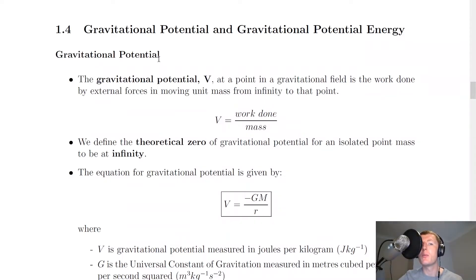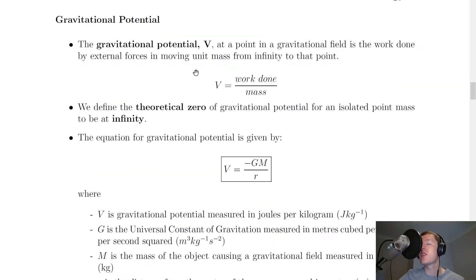Now we're going to begin by looking at gravitational potential, given the symbol capital V. At a point in a gravitational field, it is the work done by external forces in moving unit mass, i.e. 1 kilogram, from infinity to that point. So if we were to write this as an expression, we could say that V is equal to the work done divided by the mass.